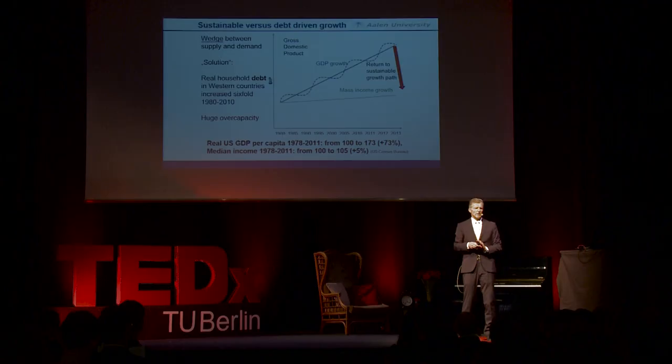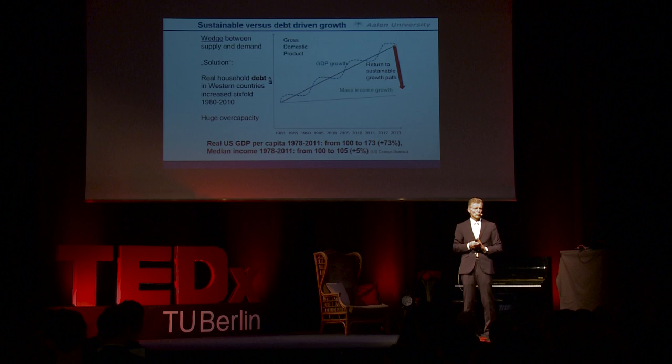We have a very dangerous situation with huge overcapacities. This situation resembles 1928, when after the roaring 20s — the golden 20s — we also had huge overcapacities, and then the Great Depression set in. So from a purely economic point of view, we have far too much capacity.